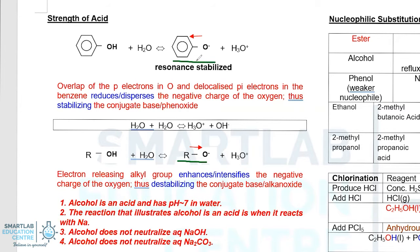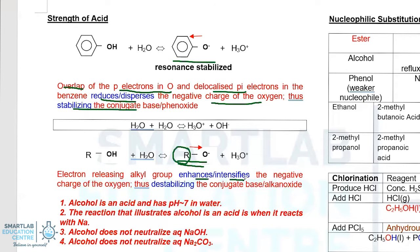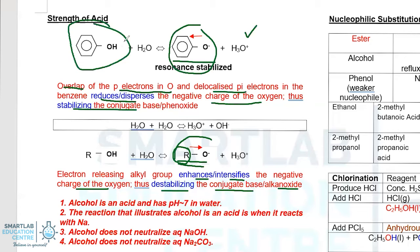Examining the structures for phenoxide and alkoxide — where alkoxide is the structure RO⁻ — we note that in the phenoxide, the overlap of the P electrons in the oxygen and the delocalized pi electrons overlap. Because they overlap, it helps to reduce or disperse the negative charge of the oxygen, thus stabilizing the conjugate base of the phenoxide. On the contrary, the R group is actually electron releasing, which enhances or intensifies the negative charge of the oxygen, thus destabilizing the conjugate base of the alkoxide. Hence, phenoxide is deemed to be more stable, so more H⁺ is released, and phenol is a stronger acid than alcohol.